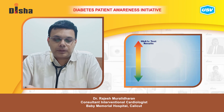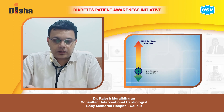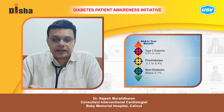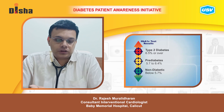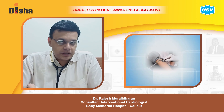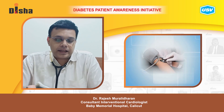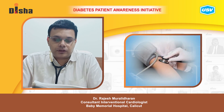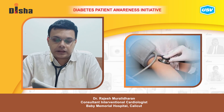HbA1c is a test to measure glucose control over the past 2 to 3 months and it should be below 7%. Blood sugar should be monitored routinely in patients with diabetes and its blood pressure target should be less than 140/80.